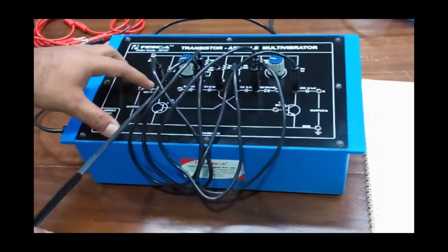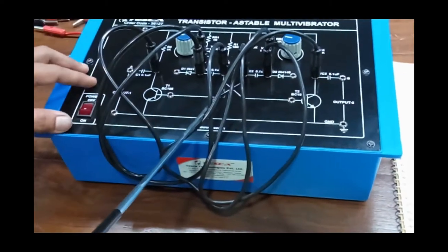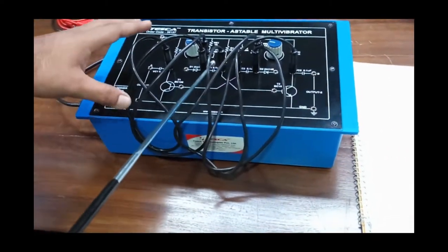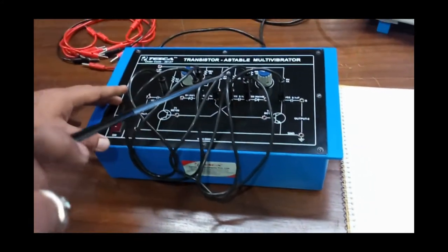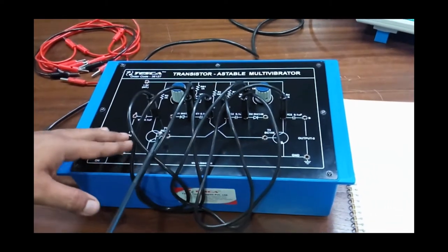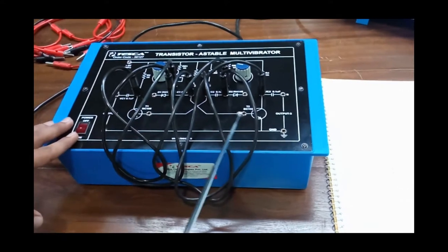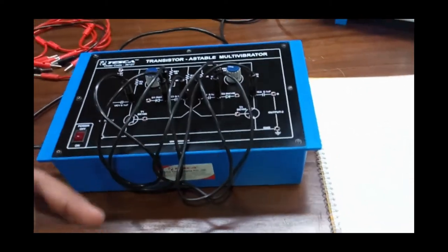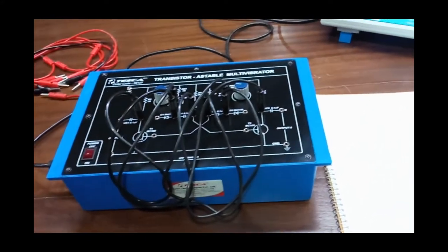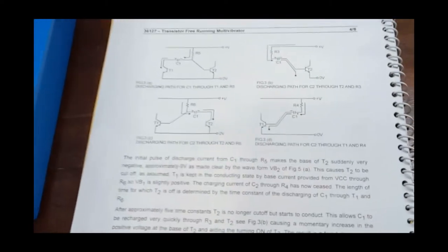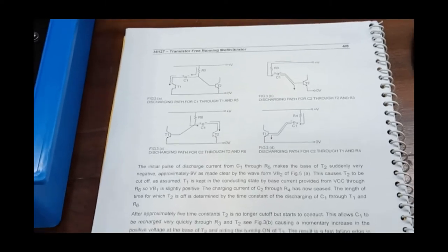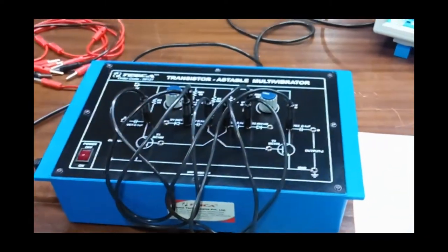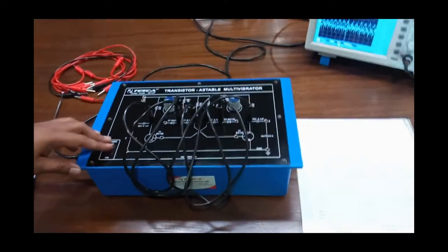The capacitor C1 had previously charged up to 9V when T2 was conducting through R3. But when T1 conducts, a path is provided for C1 to discharge through T1 and the R5 combination of RB1 plus VR1. This charging and discharging behavior and transistor conduction are explained in the circuit, and all descriptions are also provided in the manual.